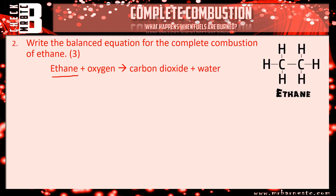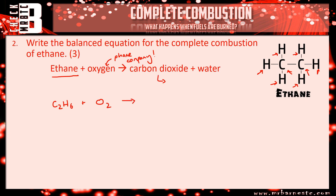On to question two - the balanced equation. The question told us we've got ethane which is C2H6, then oxygen - remember the phone company, it's O2. Carbon dioxide you should always remember is CO2, and water you should always remember is H2O. By writing those formulas you've already gained two marks in the exam nice and easily. Then all we need to do is balance it.